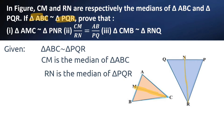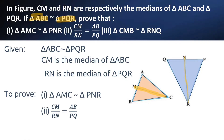To prove: there are three things to prove. The first one is triangle AMC is similar to triangle PNR. The second one is CM by RN is equal to AB by PQ. The third one is triangle CMB is similar to triangle RNQ.